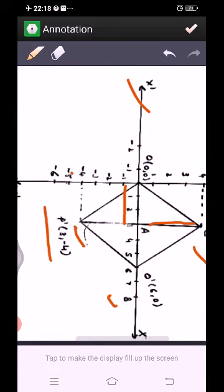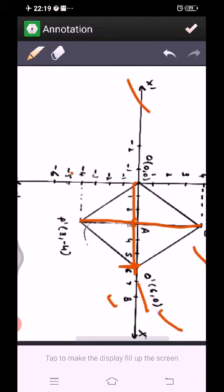Then O' is the image of origin O(0,0) when reflected in PP'. This line is PP'. We have to reflect in this. So this is at 3 unit distance. Again we will move 3 unit distance here. So the coordinates of O' are (6,0).